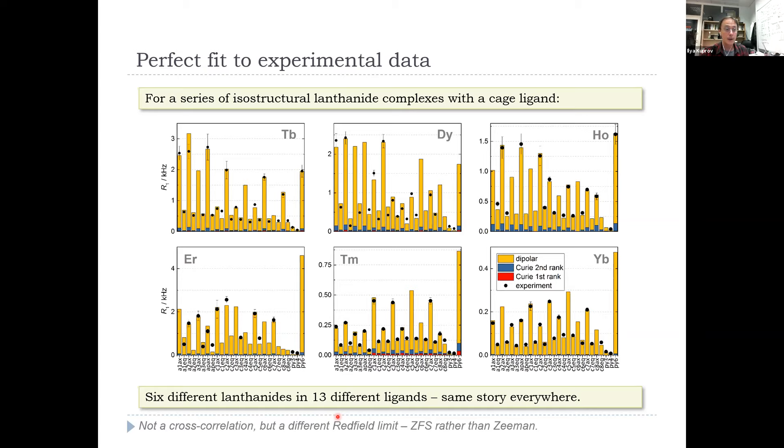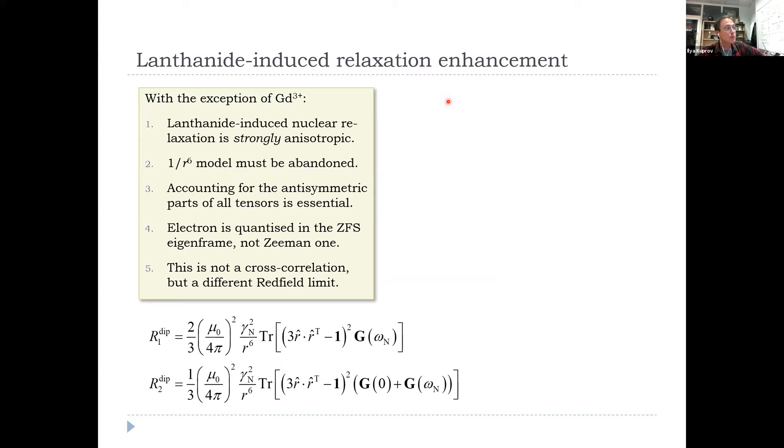All our data, so the black dots are experimental data on the corresponding nucleus, and the red are the dipolar parts, the blue are the Curie part at the temperature, perfect fit, with nothing fitted except for the total correlation tensor across six different metals in 13 different ligands. That was a three-year project, that one. So it's not actually a cross correlation. This has nothing to do with any of that. But it's a different Redfield limit. It's when ZFS dominates the H_naught rather than the Zeeman interaction. But thankfully the final answers are still fine. So with the exception of gadolinium, which is isotropic, lanthanide-induced nuclear relaxation is strongly anisotropic in the molecular frame of reference. So next time you are refining your protein structure against paramagnetic relaxation data, it's not one over R^6, it's one over R^6 times spherical harmonic. Your fit will improve massively. Every time we try it it does better structure refinement, so hopefully useful.